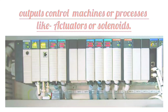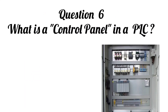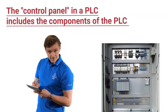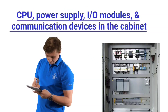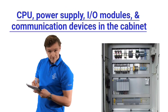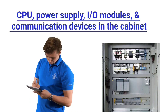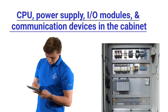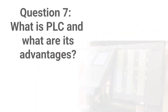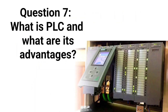Question 6: What is a control panel in a PLC? The control panel in a PLC includes components such as the CPU, power supply, input/output modules, and communication devices. All of these are housed in a cabinet, which is known as the control panel.